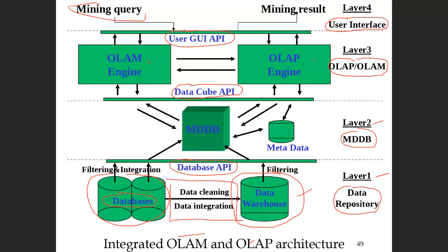After the relational database, we apply filtering and convert the data into a multi-dimensional format. In the second layer we convert this relational data into multi-dimensional cubes, where a large number of dimensions can be easily computed. We also have the metadata here. Metadata defines the data warehouse objects and the detail of the data warehouse structure.